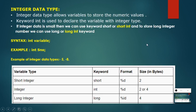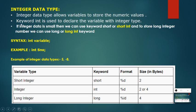Coming to the next data type — integer. Integer data type only stores numeric values; it doesn't store decimal values. It can store positive and negative values, for example 5 or -8, but not decimal values. We use the keyword 'int' for integer data type.